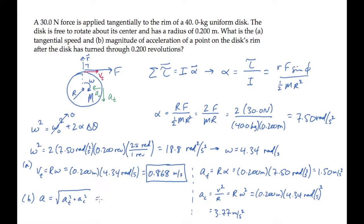The magnitude, then, is the square root of the sum of those values squared. Calculate to find it equals 4.06 meters per second squared.